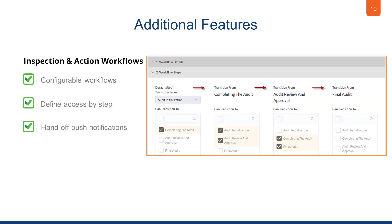Certainty also comes with checklist and action workflow tools, meaning you can create your own checklist workflows for multi-step inspections where you need to pass an inspection from one user to the next. Similarly, you can use our default one-step corrective actions or create multi-step action workflows for more involved corrective action processes.